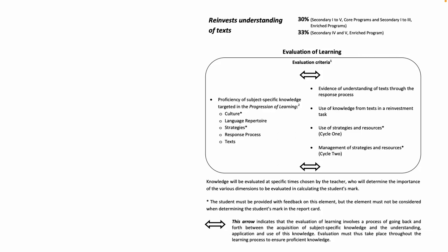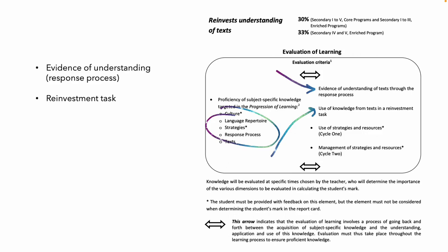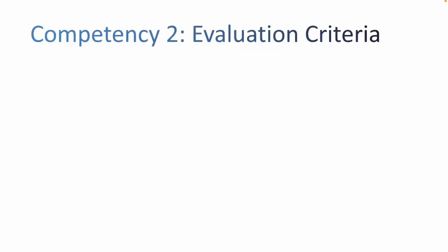This is the latest version from the Framework for Evaluation of Learning for secondary, updated with the same two criteria: evidence of understanding and the reinvestment task. What they've added here is the progression of learning, and also language repertoire — so as students read a text, watch a TV program, or listen to a podcast, can they recognize new words, expressions, and cultural ideas, and really use those in their own reinvestment tasks?